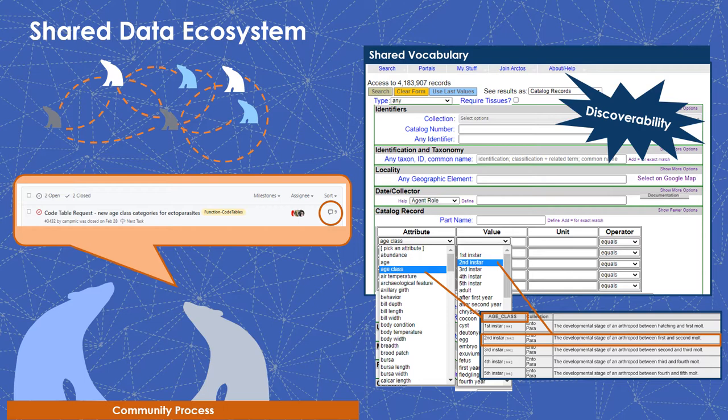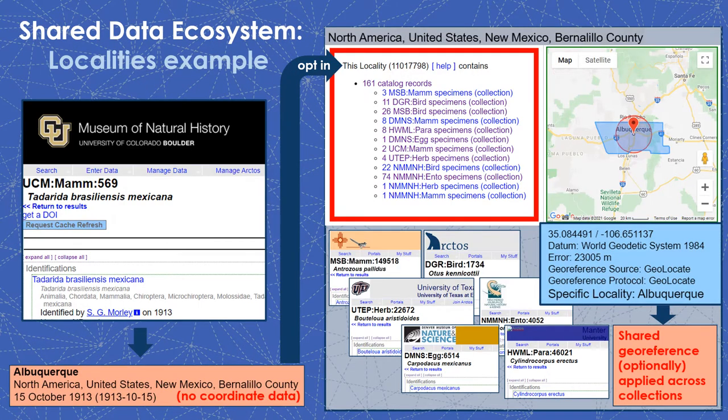At times, this community feedback process is certainly more challenging than simply making ad hoc changes to the system, but data normalization is a core tenant of Arctos, and it allows for predictable queries that promote discoverable, research-grade data. Beyond discovery, shared data often leads to efficiencies and collaborative data quality improvements.